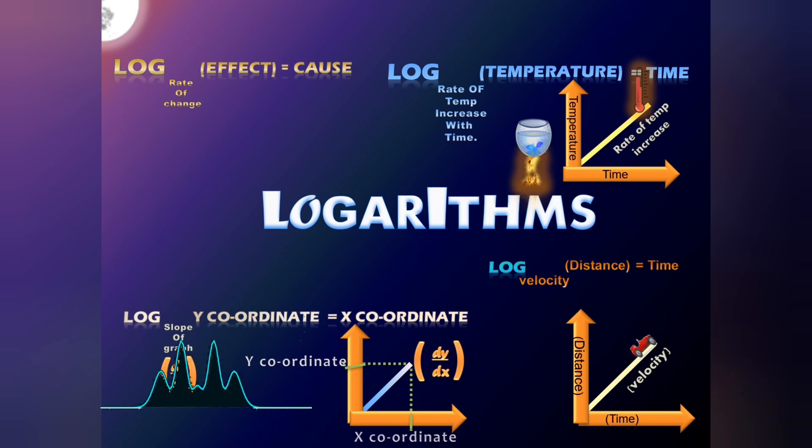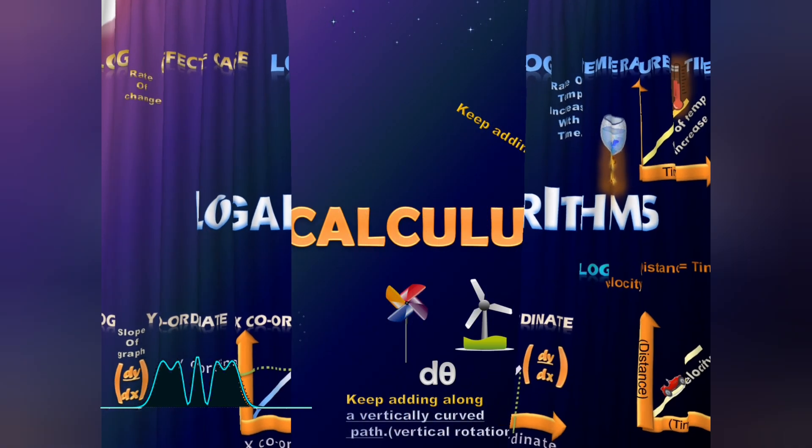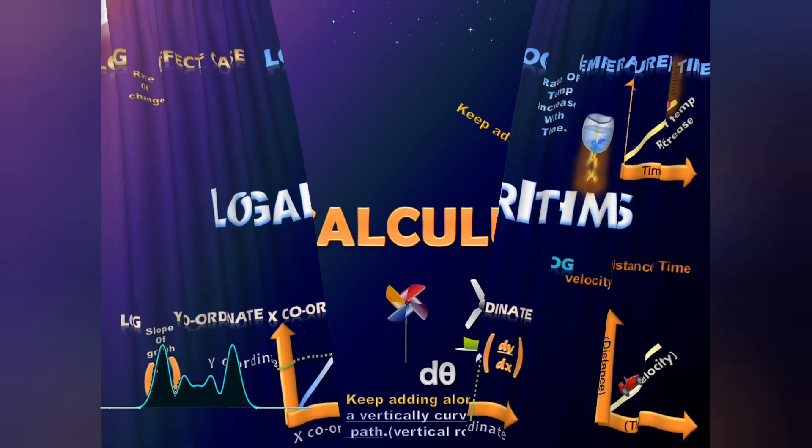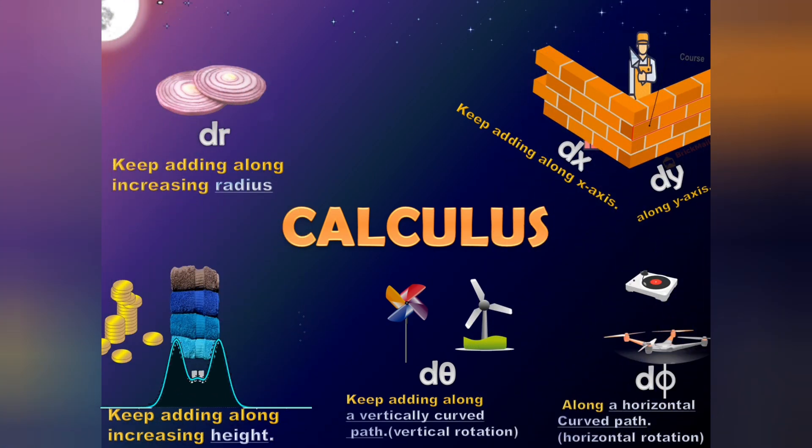In calculus, dx means keep adding along the x-axis. dy means keep adding along the y-axis. dz means keep adding along the z-axis. d theta means keep adding along a vertically curved plane. d psi means keep adding along a horizontally curved plane. dh means keep adding along increasing height. dr means keep adding along increasing radius.